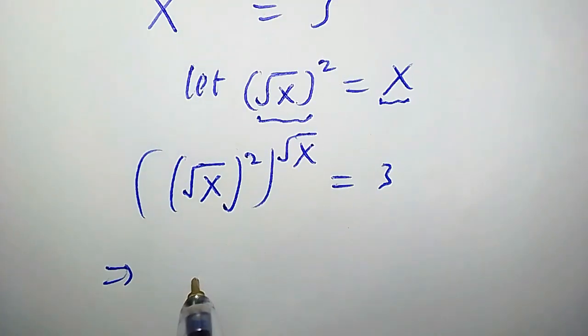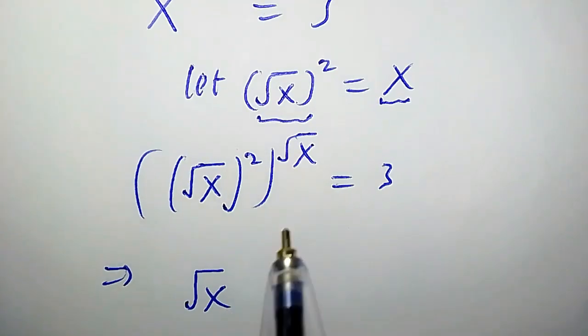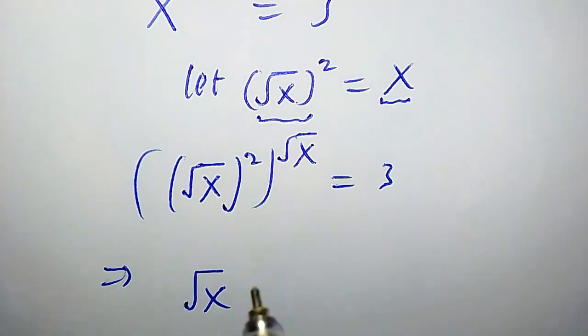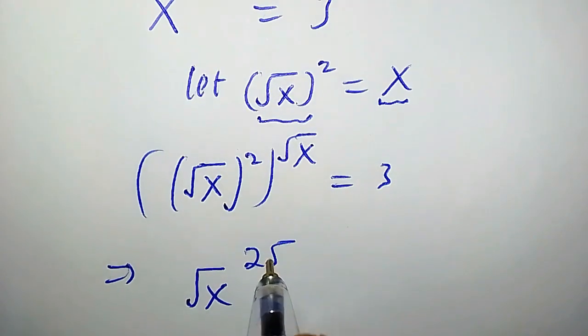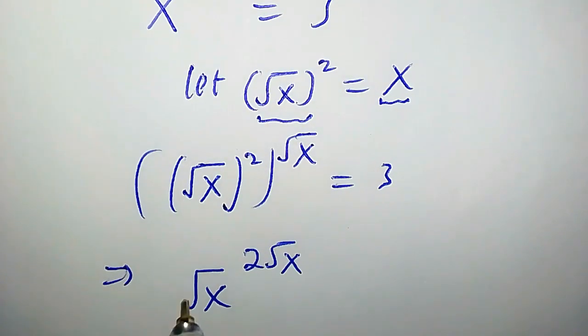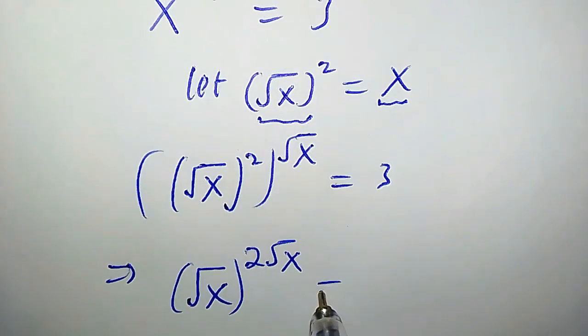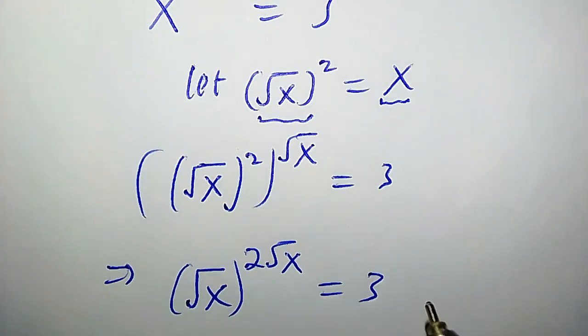This implies that square root of x to the power of 2 times square root of x — that is, (√x)^(2√x) — equals 3.